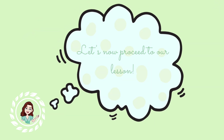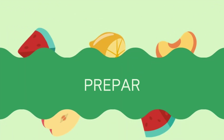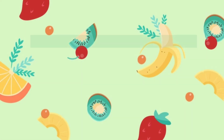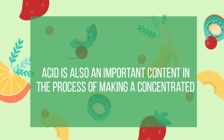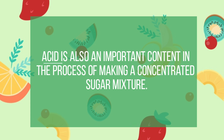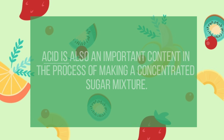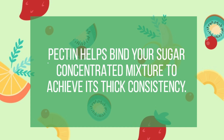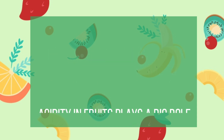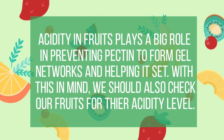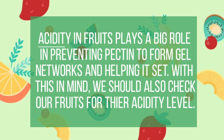Let's now proceed to our lesson: Preparing an Acid Mixture. In the process of making a concentrated sugar mixture, besides pectin, acid is also an important content to look out for. In boiling your fruits, some of their pectin content is released. As we learned from our previous module, pectin helps bind your sugar concentrated mixture to achieve its thick consistency. However, acidity in fruits plays a big role in preventing pectin from forming gel networks and helping it set. With this in mind, we should also check our fruits for their acidity level.